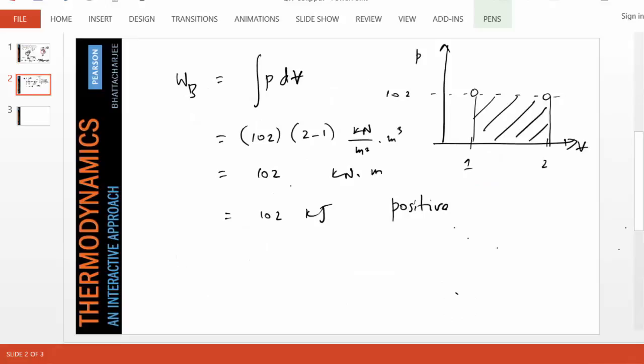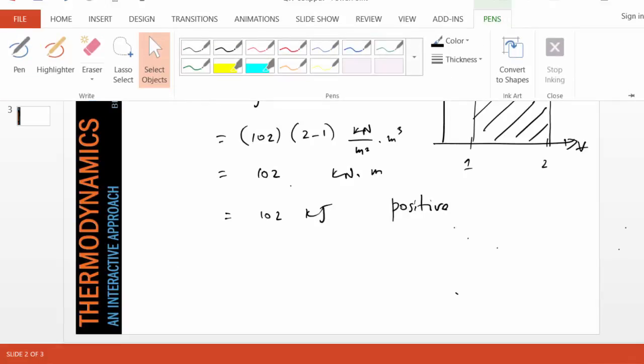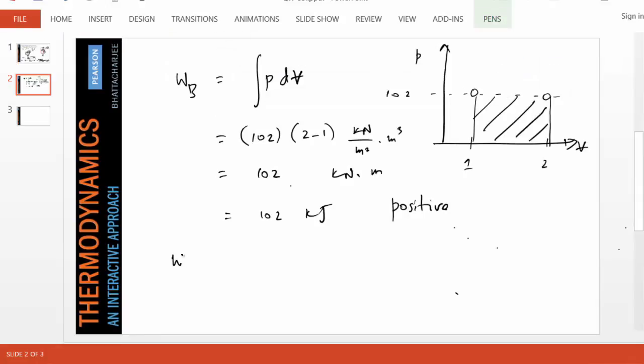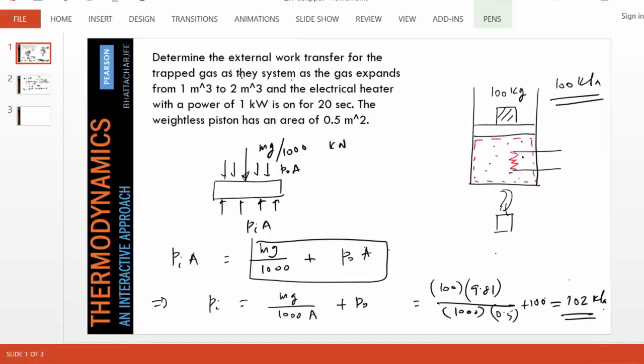What about the electrical work? The electrical work on the other hand is going into the system. Electrical work is the rate of electrical work times time, which is negative one kilowatt times 20 seconds, which is negative 20 kilojoules. In other words, the electrical work is pumping energy into the system, and within the 20 seconds of time, 20 kilojoules has crossed the boundary going into the system.